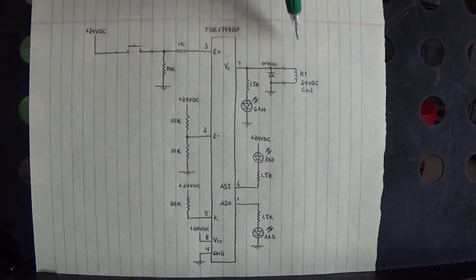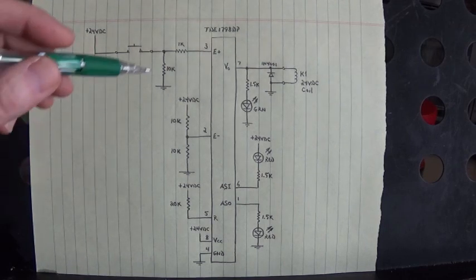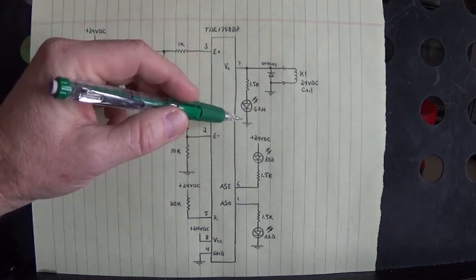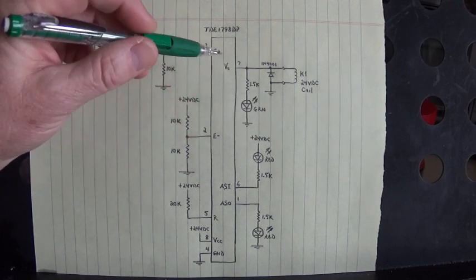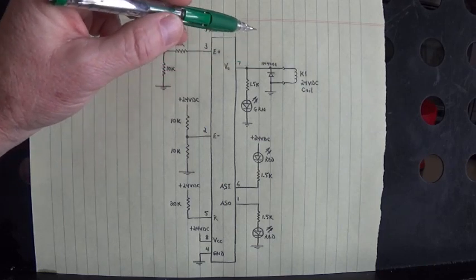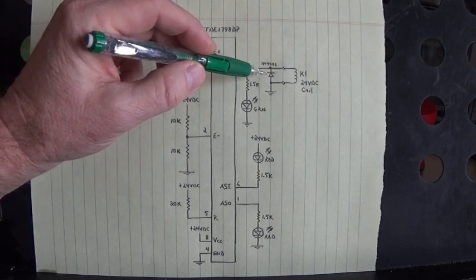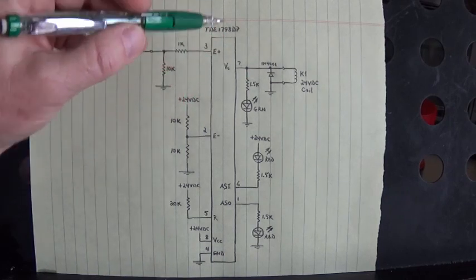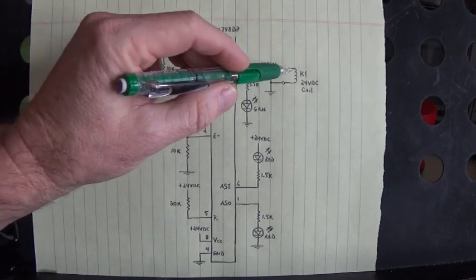I don't show the contacts, just the coil. Here's the green LED that indicates the output is turned on right there. This is the spike suppression diode - you always want to have a spike suppression diode when you're turning on a DC relay coil.